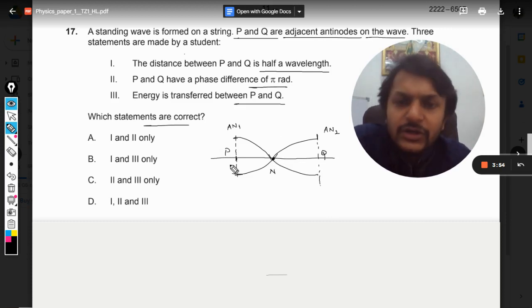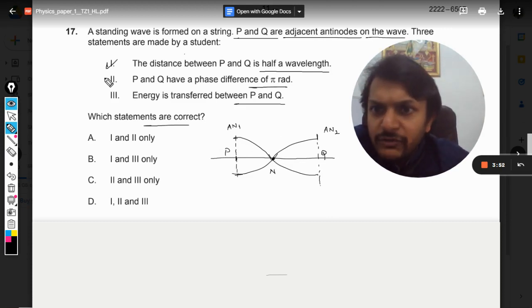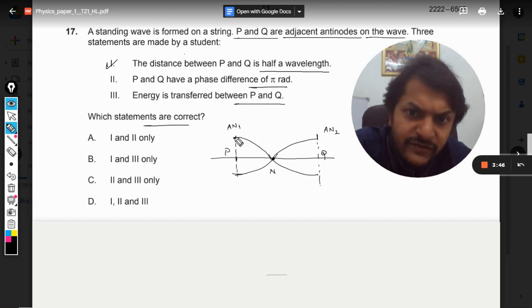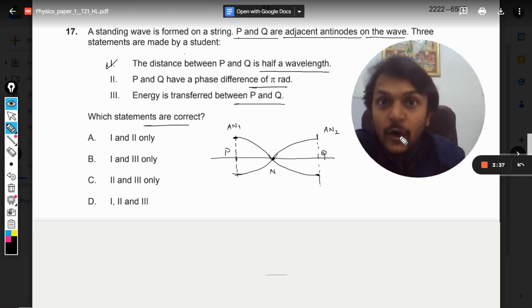Definitely according to our first statement, the distance between P and Q is half the wavelength. And yes, absolutely. You are starting from one crest and you're moving to the trough, and then if you move back to the crest it becomes the full wavelength. But now it is half wavelength, so this statement is absolutely correct. There is no doubt about it.